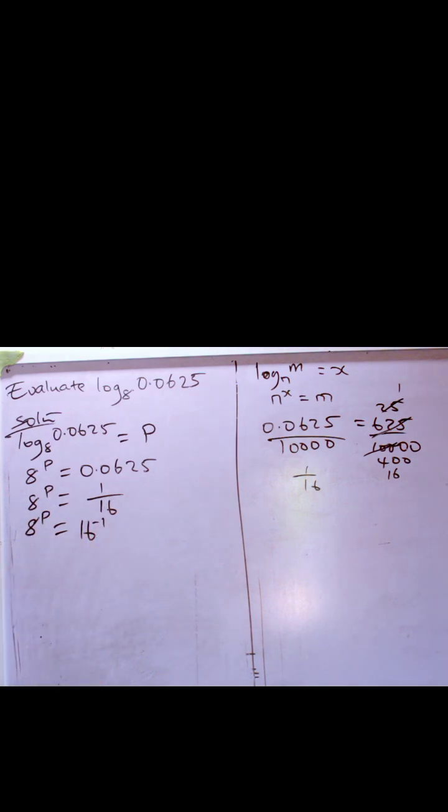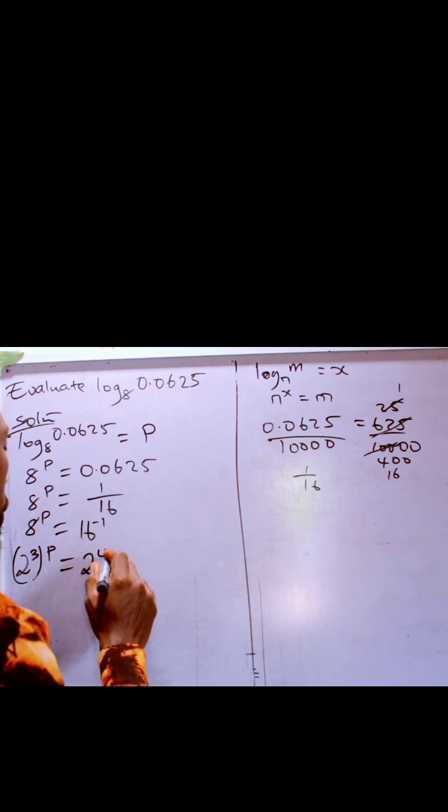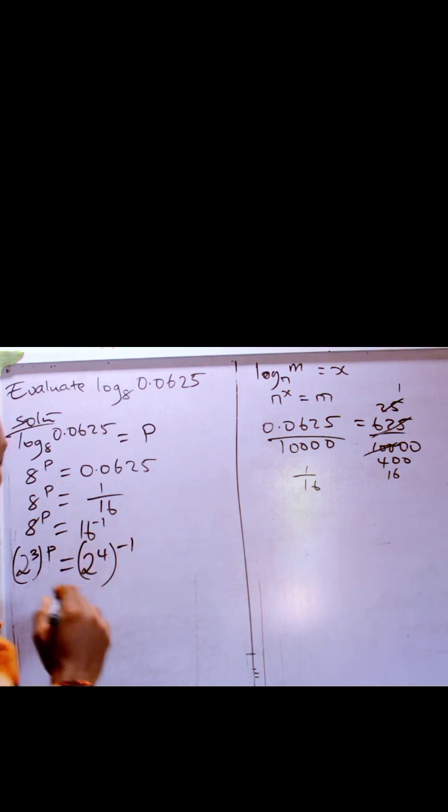Can we express it to a common base? Sure we can. 8 is the same thing as 2 raised to power 3, so we have 2 raised to power 3, all raised to power p, equals 16 which is 2 raised to power 4, so we have 2 raised to power 4, all raised to power minus 1.